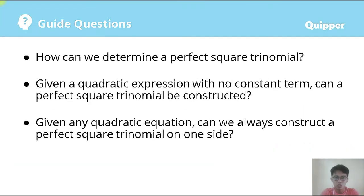For guide questions, we have three important ones. First, how can we determine a perfect square polynomial? Second, given a quadratic equation with no constant term, can a perfect square polynomial be constructed? And lastly, given any quadratic equation, can we always construct a perfect square polynomial on one side? All three questions are very important to guide our discussion.